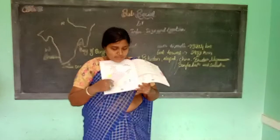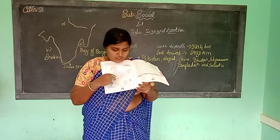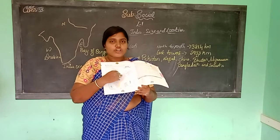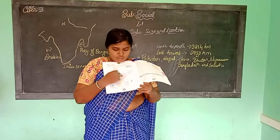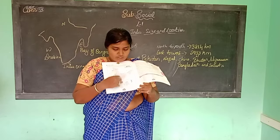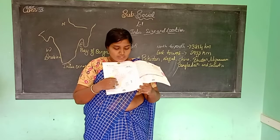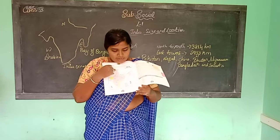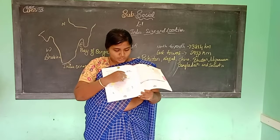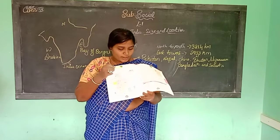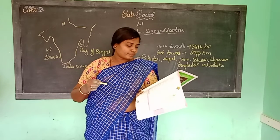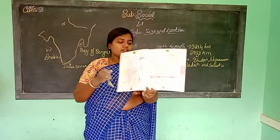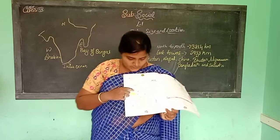Purple color is the Southern Deccan Plateau. Gray color is the Himalayan mountains. White represents the Islands. Coastal area means there are seas and oceans nearby — that area is called coastal area. Light yellow color represents the Indian Desert.